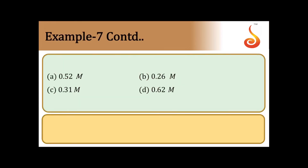Looking at the options given, the answer is option C, which corresponds to [Ag+] = 0.31 M.